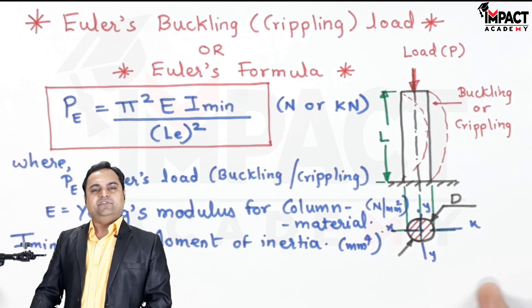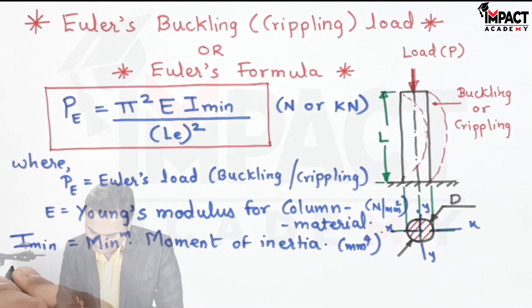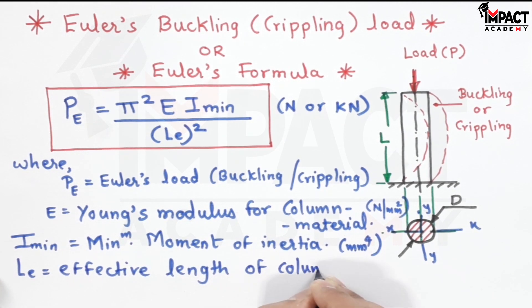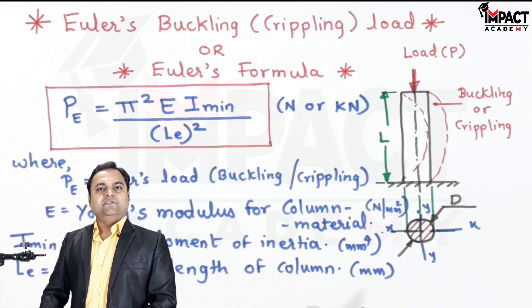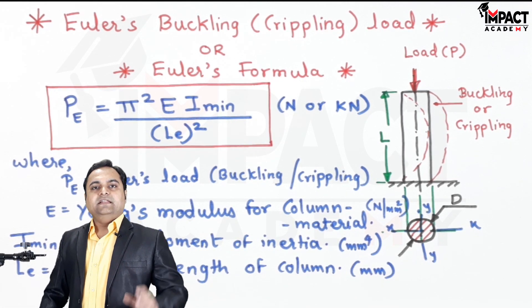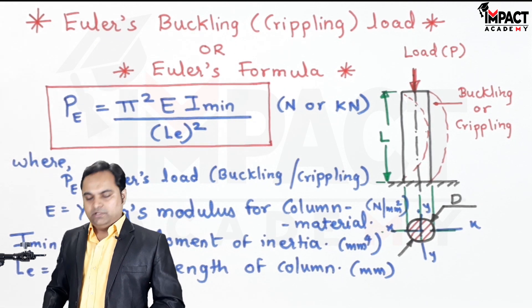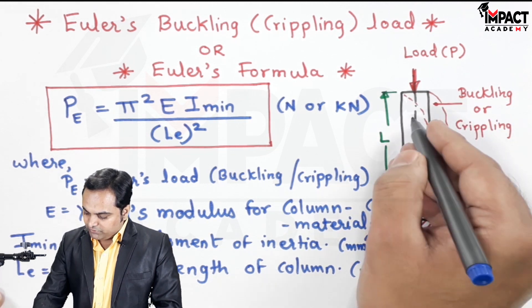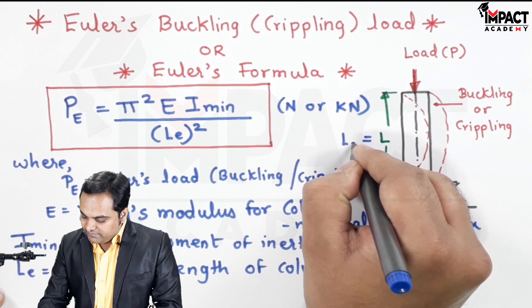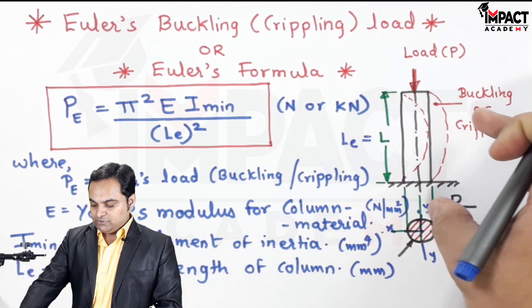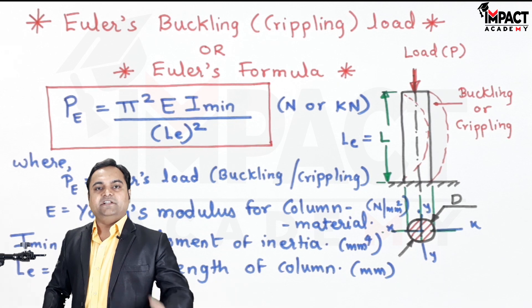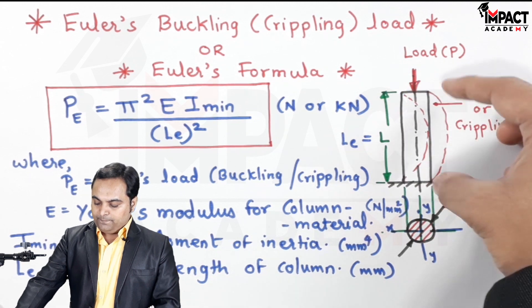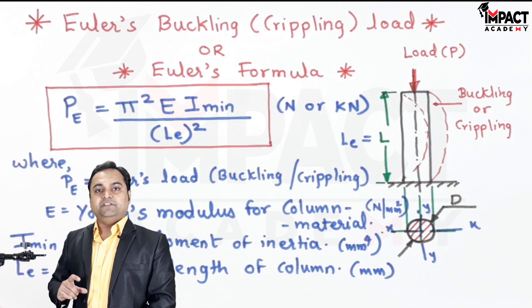Next, L_E. L_E is the effective length of column, or it is also called the length of column which actually takes part in bending. For example, if the length of column is L and suppose the entire length is bending, then this L_E effective length would be equal to the length of the column. It is defined as that length of the column which takes part in bending or which actually bends. Sometimes it may happen that the complete length of the column may not bend, but only a small portion of the length may bend. So that would be called the effective length of the column.